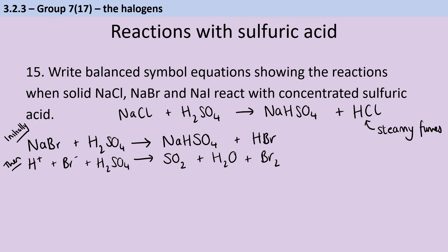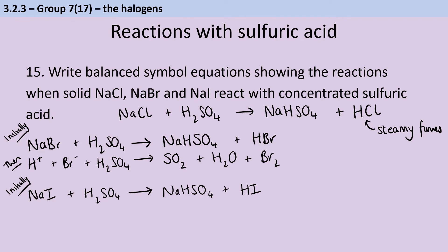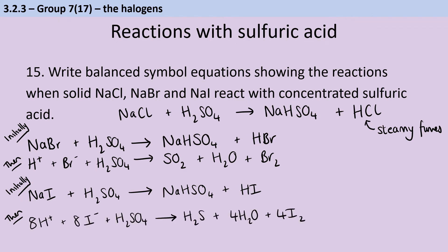For sodium iodide, we also have two reactions. Initially, we produce sodium hydrogen sulfate and hydrogen iodide. But then those iodide ions reduce the sulfur in the sulfuric acid, and this time we produce hydrogen sulfide — which smells terrible — and also water and iodine, which you'll be able to see being produced.